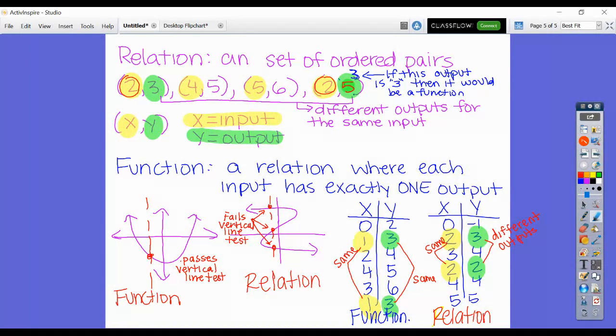Any time you're looking and trying to decide if a relation is a function, look at your x values. If your x values are all different, then it's going to be a function. If you have the same input and it gives you the same output multiple times, it is a function. If you have the same input and different outputs, then it is only a relation. If it passes the vertical line test, it's a function. If it doesn't pass the vertical line test, it is only a relation.